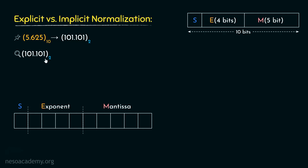If we convert this bit sequence in explicit normalization form, we move the radix point from its original place to the left-hand side of the most significant one in the bit sequence. To do so, we had to move the radix point three bits towards the left, and that is the reason why the exponent of base two is set as three. So this is the explicit normal form of this value.